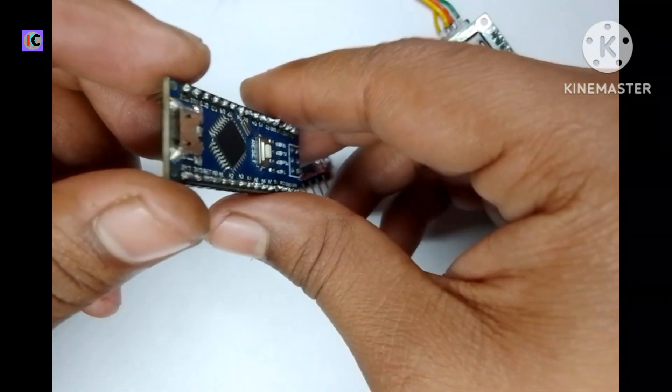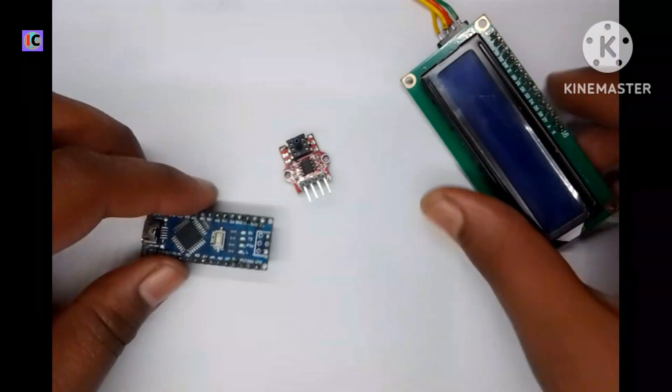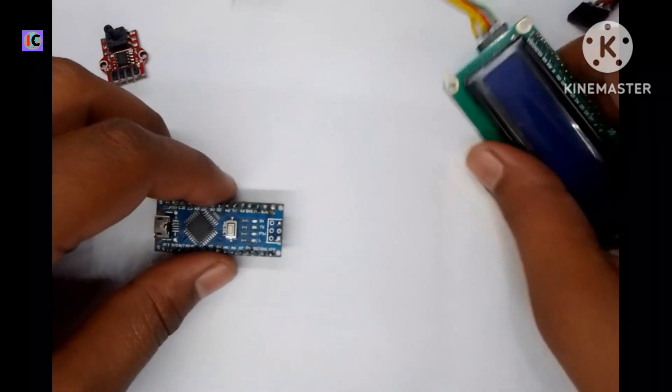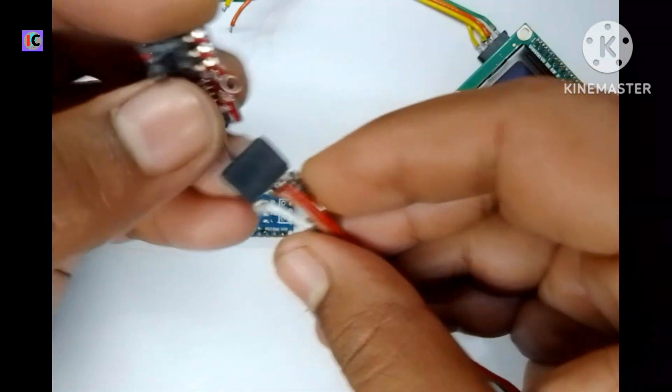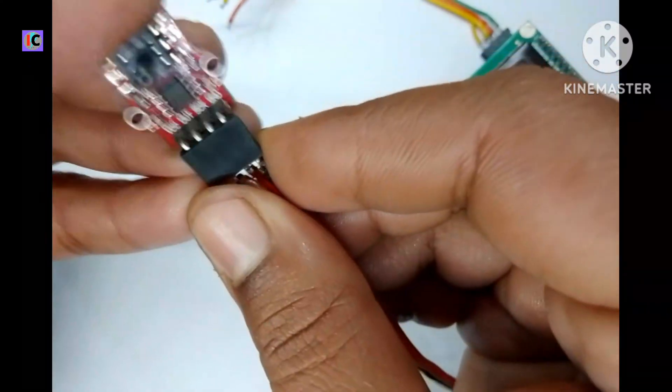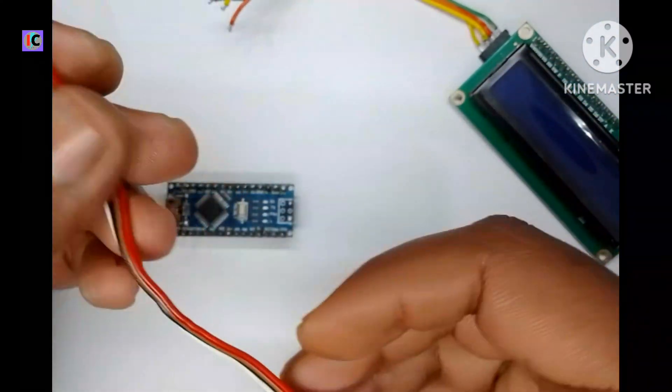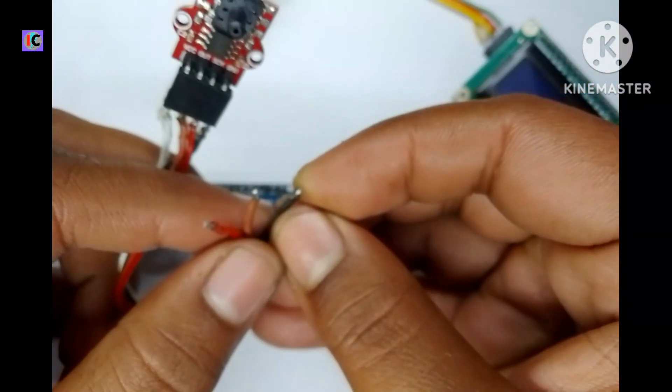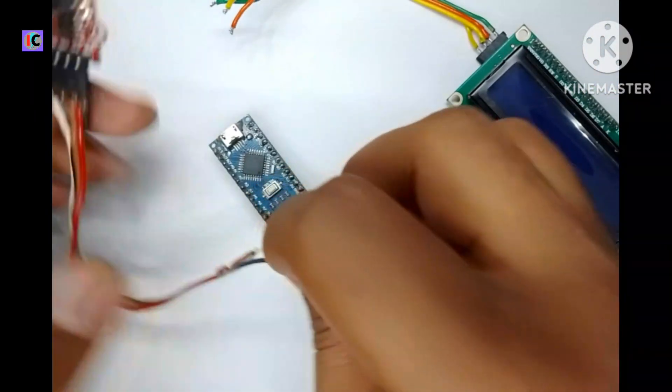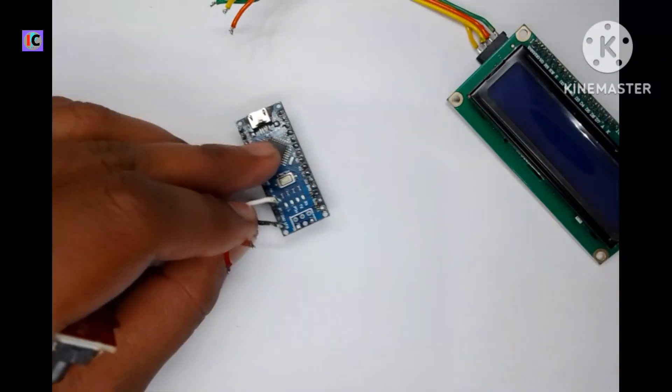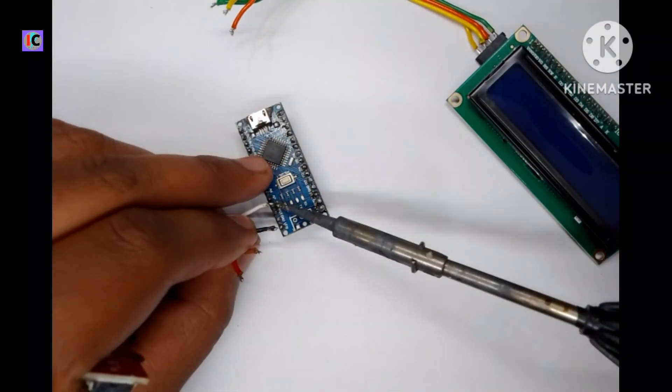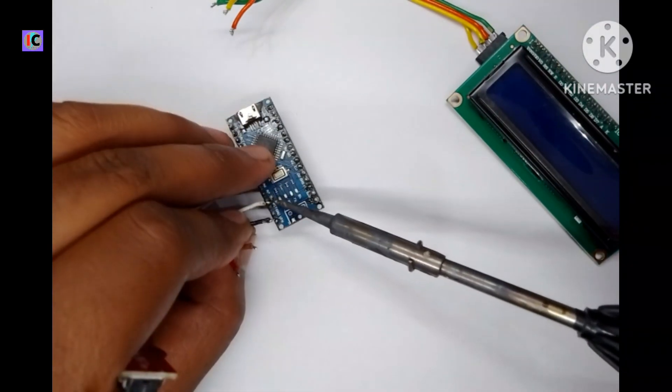I have made a 4 pin connector for the sensor to connect with Arduino easily. Now I am going to connect the VCC pin to 5 volt and ground respectively.